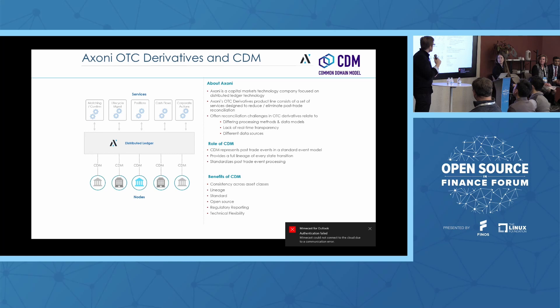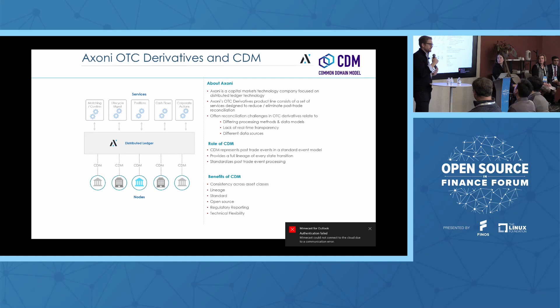That lineage is incredibly useful when multiple parties are trying to understand how a trade went throughout its lifecycle in a consistent manner. We also use CDM to standardize how those events are actually processed, not only represented. Benefits include consistency across asset classes, that sense of lineage, and it's open source. Regulatory reporting — especially the DRR initiative — is a large incentive. CDM offers technical flexibility: it can be represented in Java, Scala, and serialized as JSON, Avro, or Protobuf.